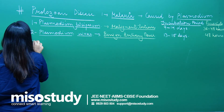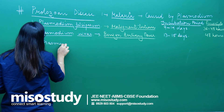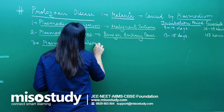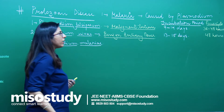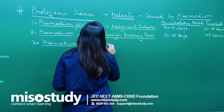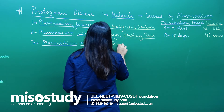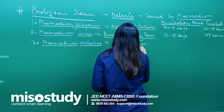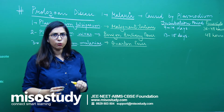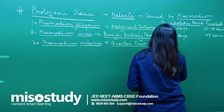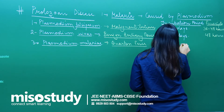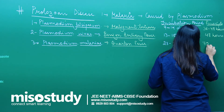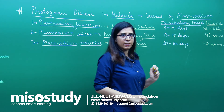Let us talk about the third species, plasmodium malariae. Plasmodium malariae causes quartan fever. In this case the incubation period is around 28 to 30 days, and the fever cycle is 72 hours.